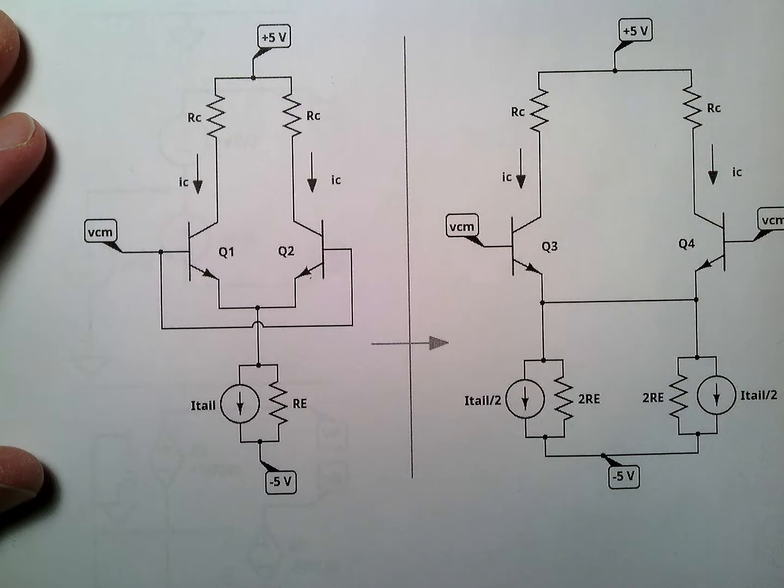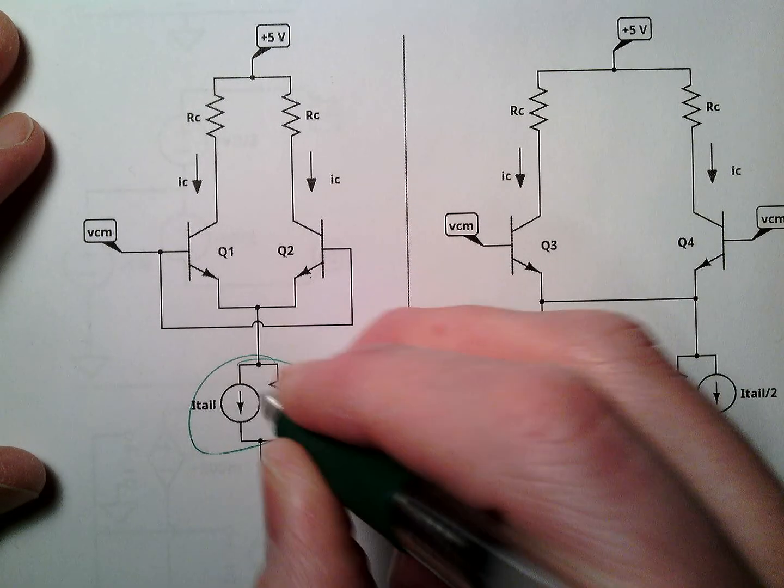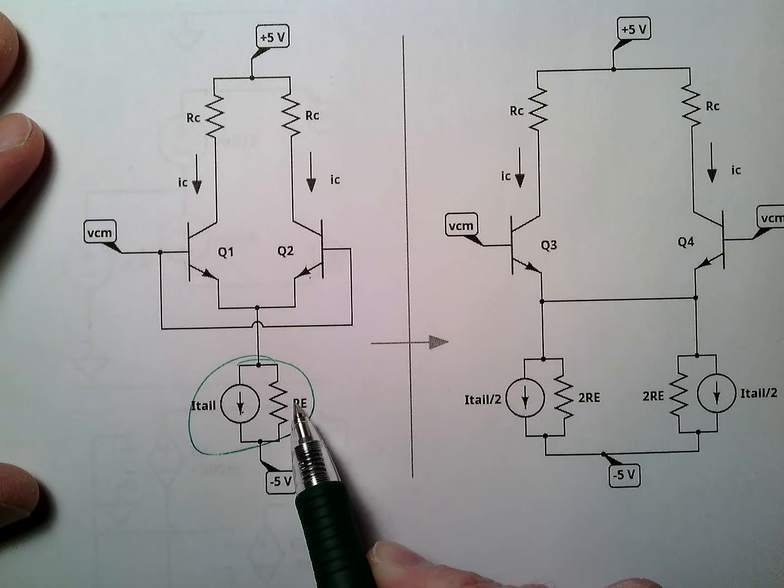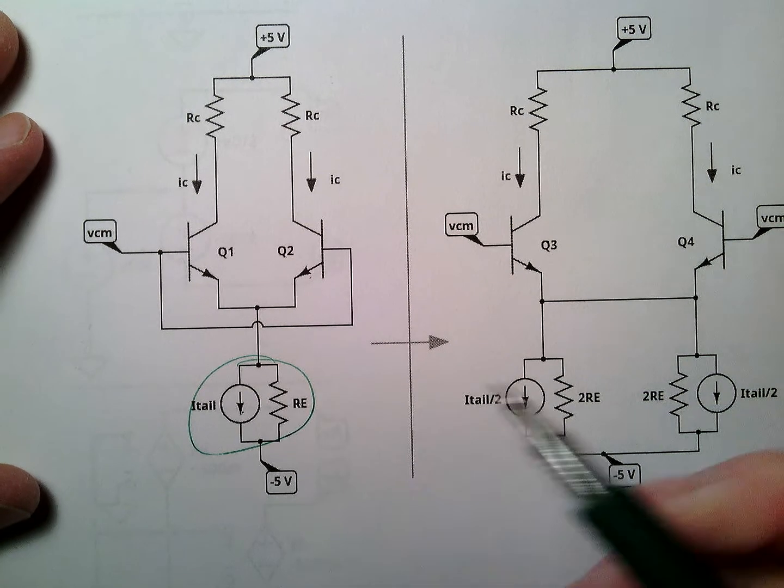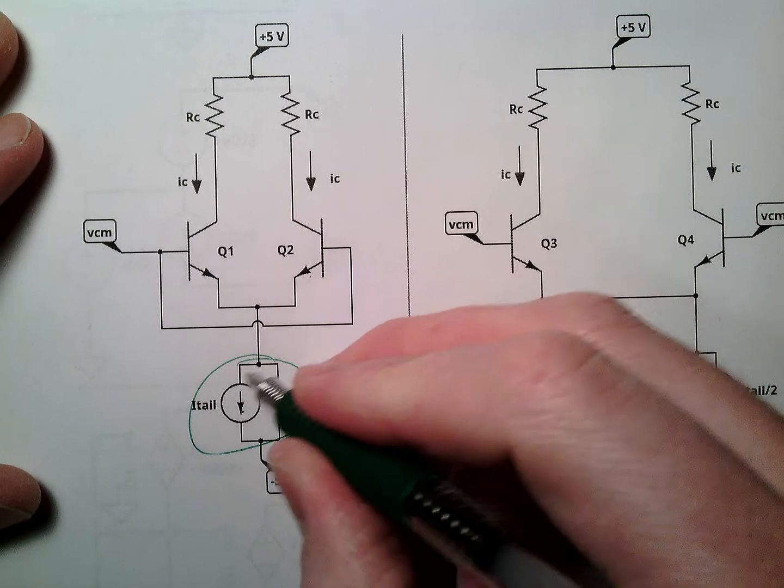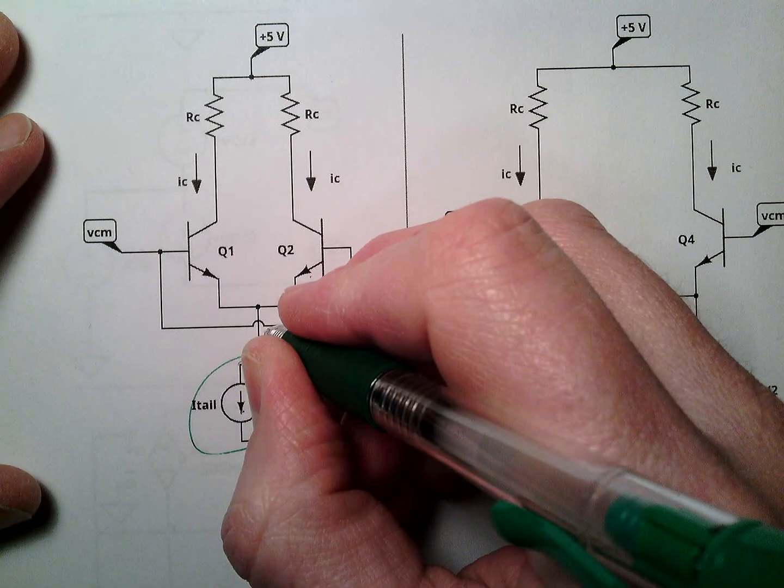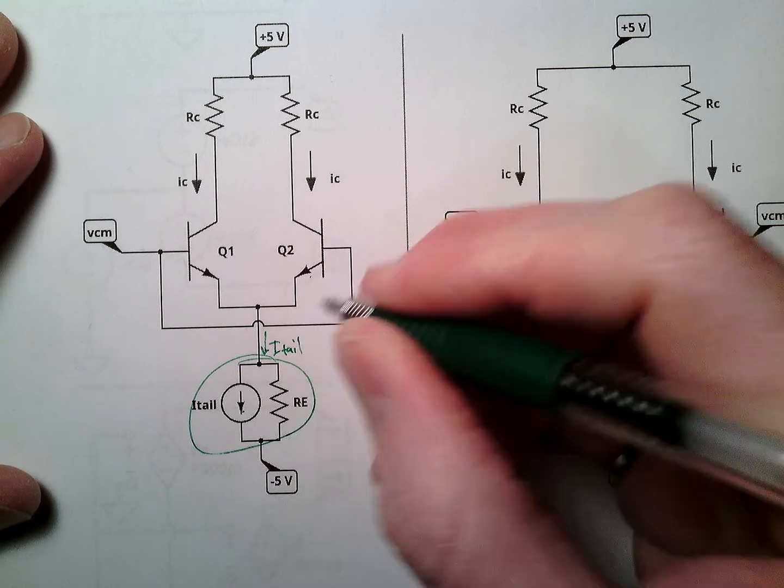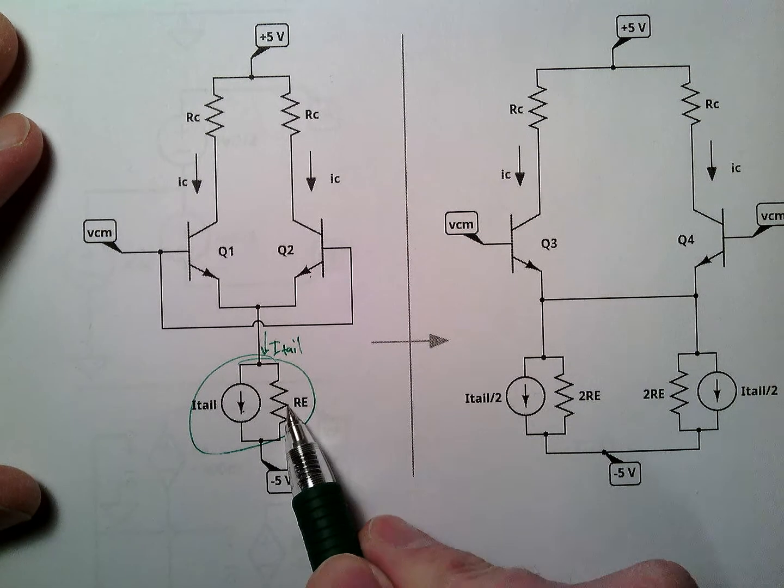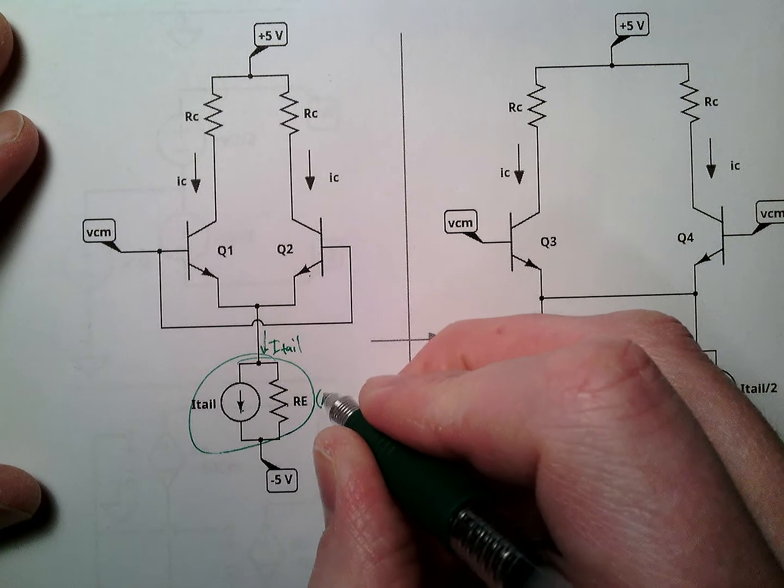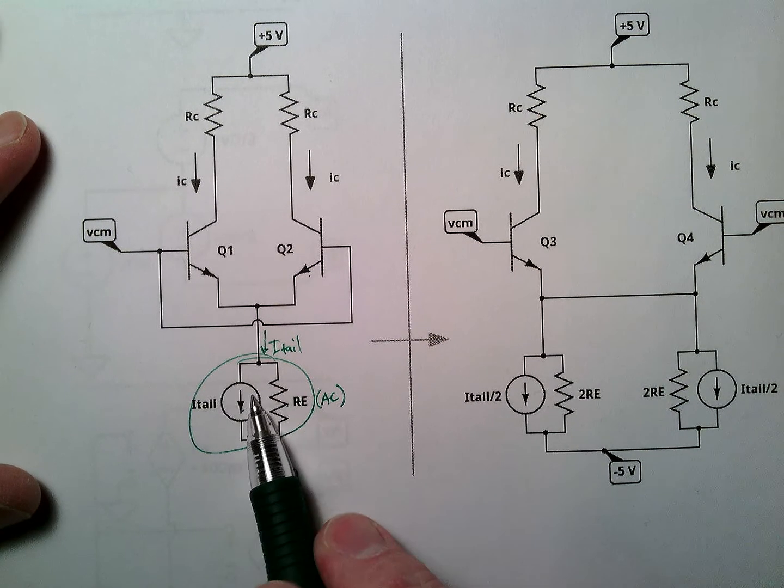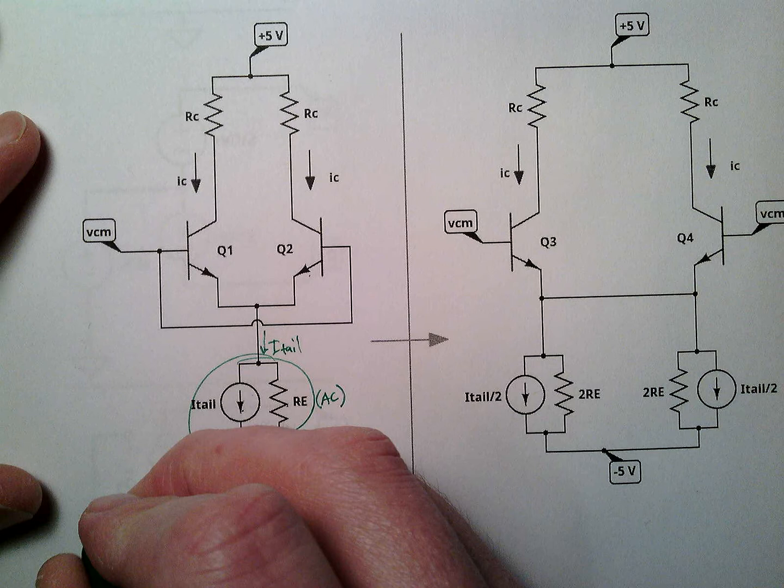Another note here is this current source here. This is an ideal current source, but it's in parallel with this resistor. Really what we're saying, this is just a view of this circuit, that this is really itale. We're not going to use Ohm's Law for DC. I'll put this for AC for this circuit. Remember that ideal current sources turn into an open circuit